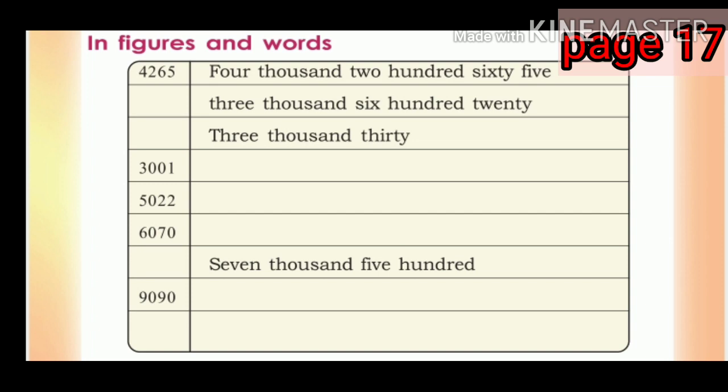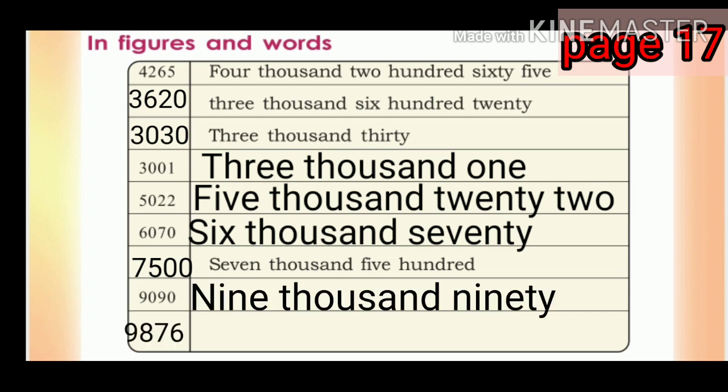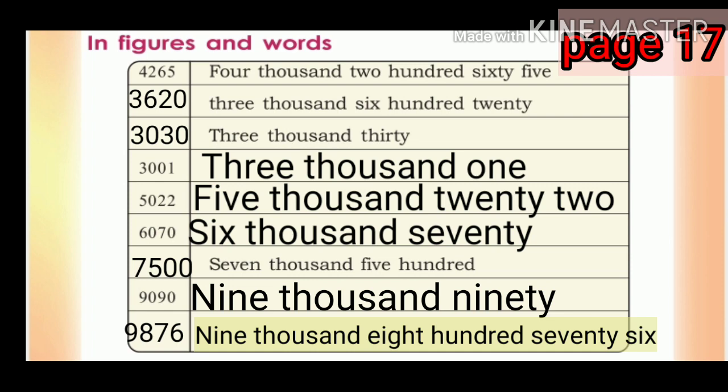Next, in figures and in words: four thousand two hundred sixty-five, three thousand six hundred twenty, three thousand thirty, three thousand one, five thousand twenty-two, six thousand seventy, seven thousand five hundred, nine thousand ninety, nine thousand eight hundred seventy-six. You can write any number there.